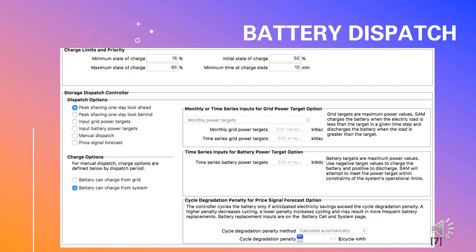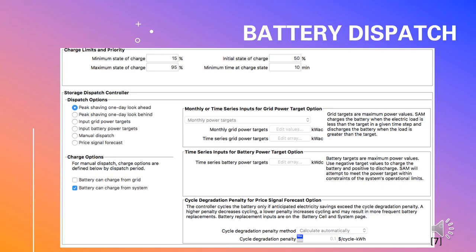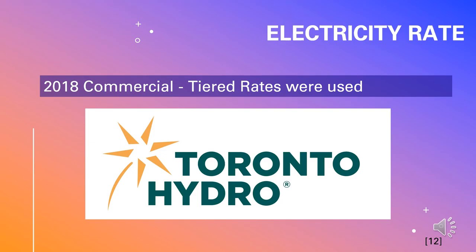The dispatch option was set to peak shaving one-day look-ahead and the battery was set to charge only from the system. In the system cost section, it was important to determine the cost per kilowatt hour for the solar panels and the inverters, included to accurately calculate the operational amounts for our LCOE. In the parameters section, we changed the loan rate to 7%, as we learned in class this is the typical amount used. We looked for incentives available for green energy projects including solar and energy storage, but unfortunately no incentives are currently available.